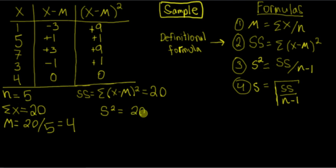So our sample variance formula is just our sum of squares divided by little n minus one. And so we'll get 20 divided by four, which is then going to give us a sample variance of five.